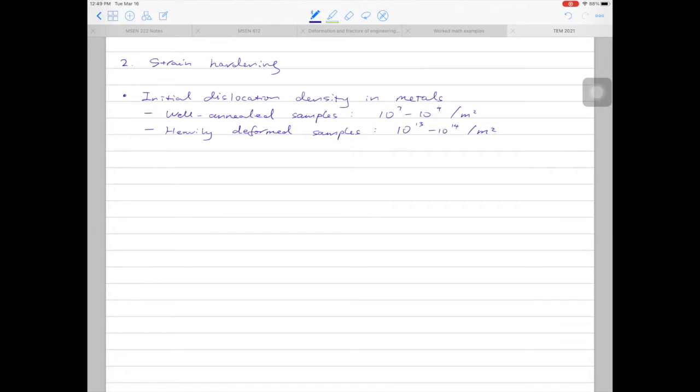Second, let's look at the unit of dislocation density. The unit is per meter squared. The reason is because dislocation density is dislocation length divided by volume. The length unit is meter. The volume unit is meter cubed. Meter over meter cubed gives us per meter squared.